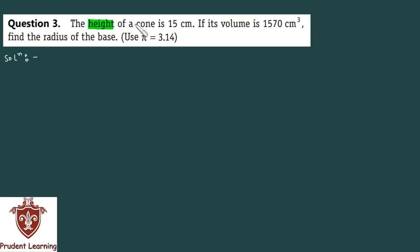The height of a cone is 15 cm. If its volume is 1570 cm³, find the radius of the base using pi equals 3.14. In this question, you are given the cone's height and volume, and you need to find the base radius. It's an easy question. Let us see the solution.